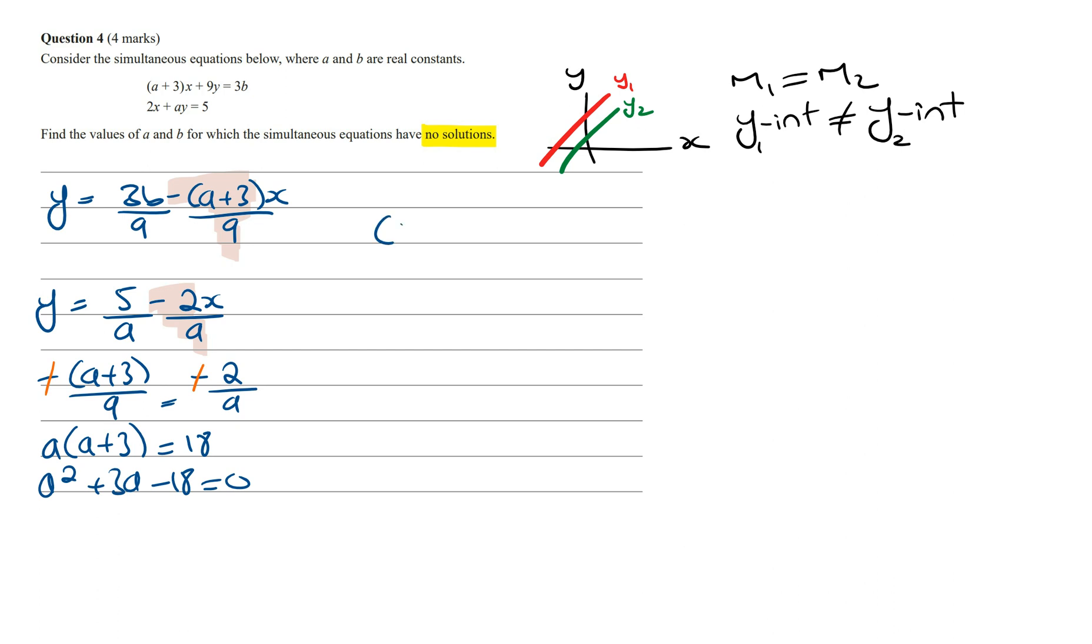And now factorising this, this is going to be A plus 6 times A minus 3 is equal to 0. And so this means A is equal to minus 6, or A is equal to 3. And so when A is equal to minus 6, or when A is equal to 3, we're going to have the gradient of these lines to be the same, which satisfies the first condition.